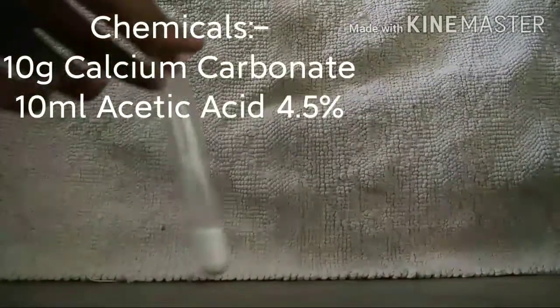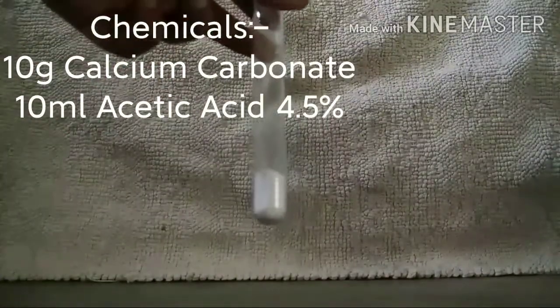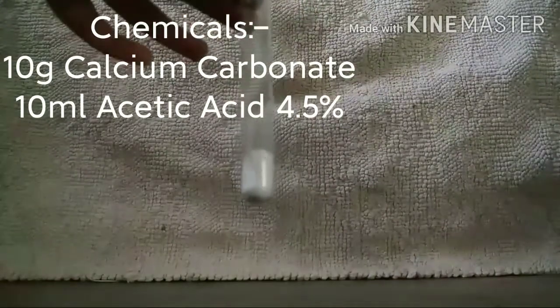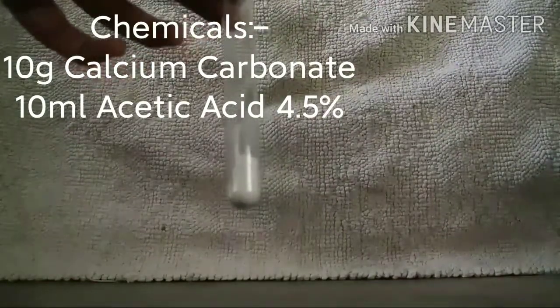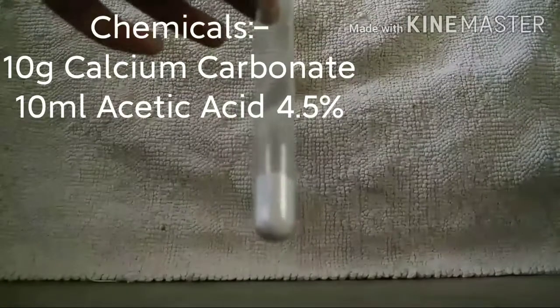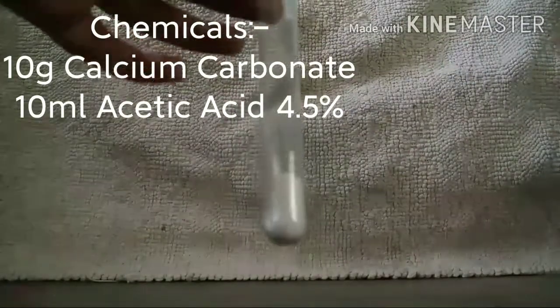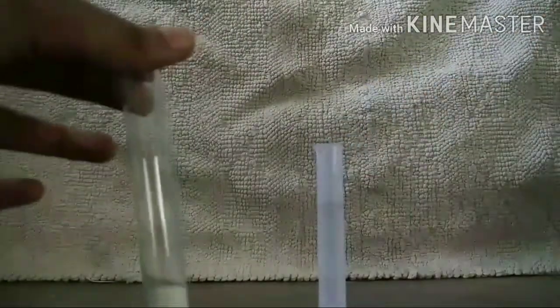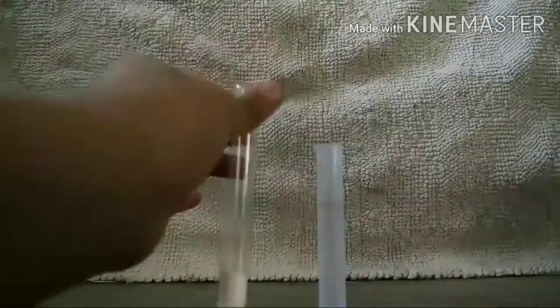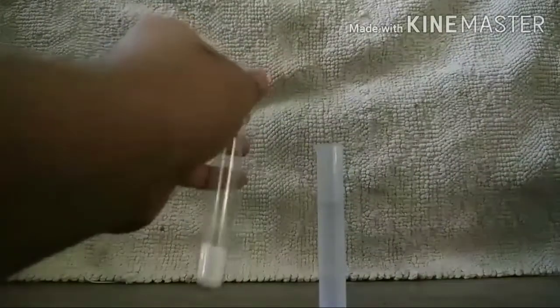First of all, in a test tube take some calcium carbonate. You can obtain it in the form of eggshells. Instead of calcium carbonate, you can also use some hydrated lime, and we will also need some vinegar. Let's add the vinegar slowly to the test tube containing calcium carbonate.